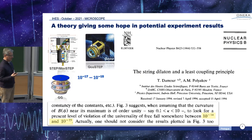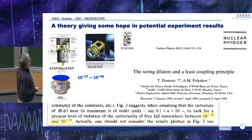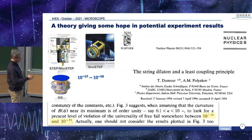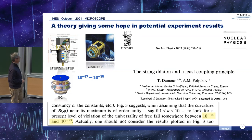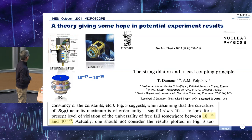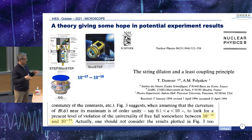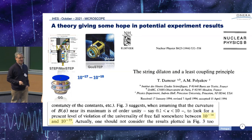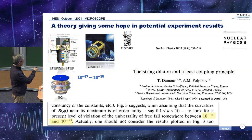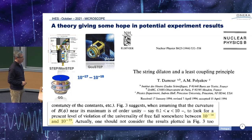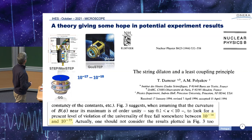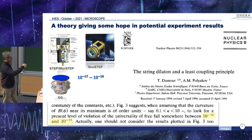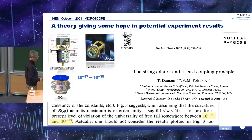That paper gave us a lot of ideas to make experiments in space. In particular, Thibault mentioned that we could eventually see a violation of the equivalence principle at a level between 10^-14 and 10^-23 — a large range, I have to admit. At that time, people imagined missions like mini-STEP in Stanford, STEP, GeoSTEP with CNES in France, and the GG mission in Italy, all aiming for around 10^-17.